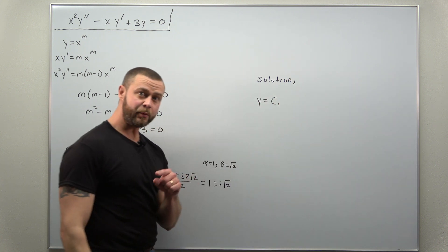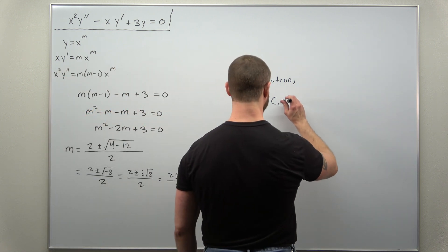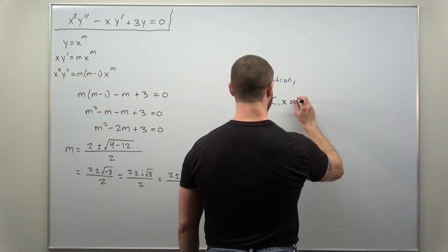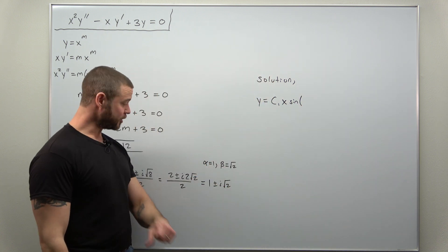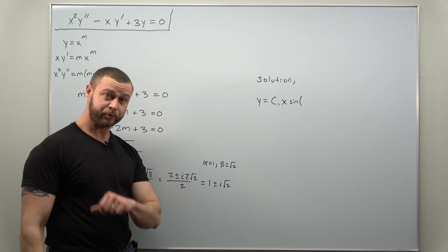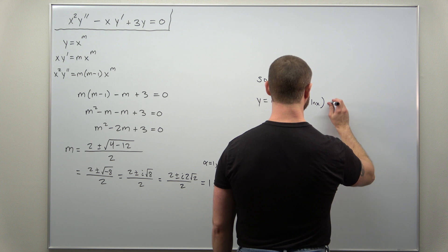You get a term C1 times x to the alpha, so x to the 1. And then you get sine of beta times natural log of x, so square root of 2 times natural log of x.